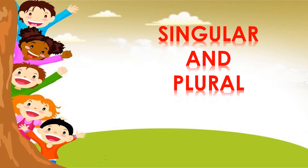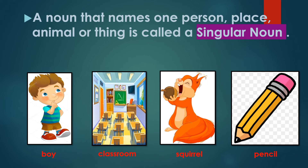Hello kids! Now let us learn about singular and plural nouns. Children, always remember a naming word, that is a noun, can refer to one or more than one person, place, animal or thing.